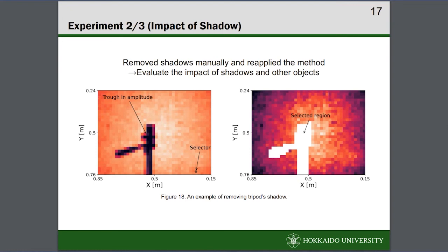In the second experiment, we removed shadows manually from the images. In Figure 18, an example of removing tripod's shadow is shown. This experiment is conducted to evaluate the impact of shadows and other objects.